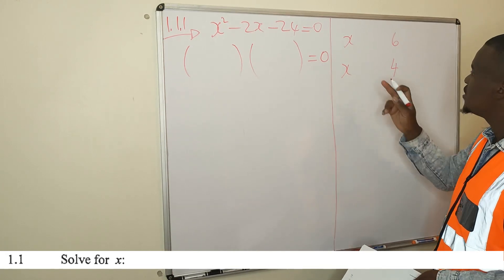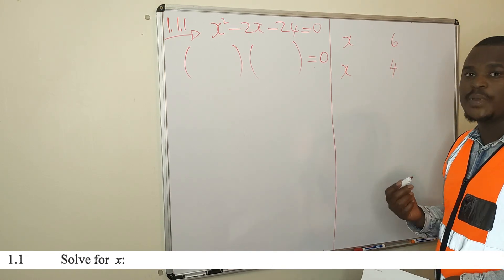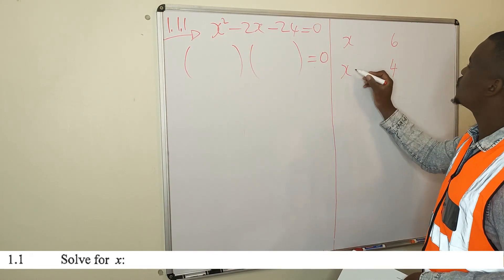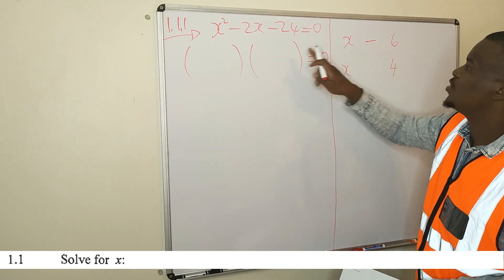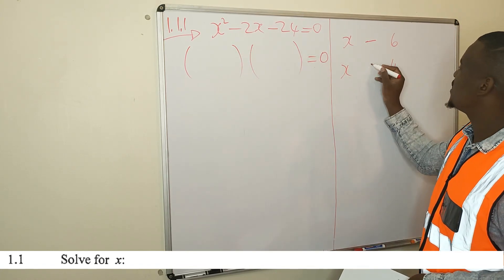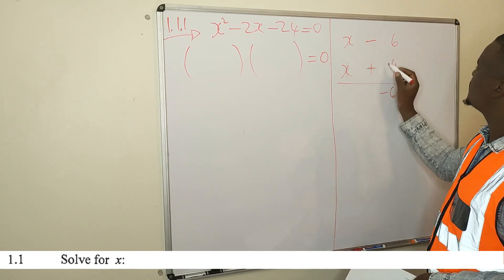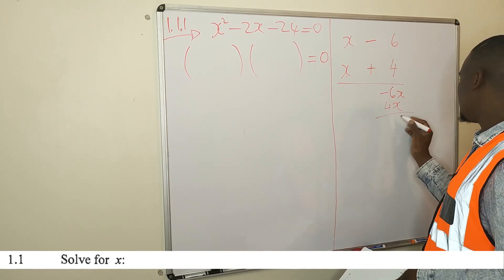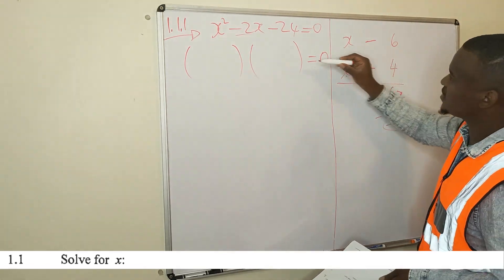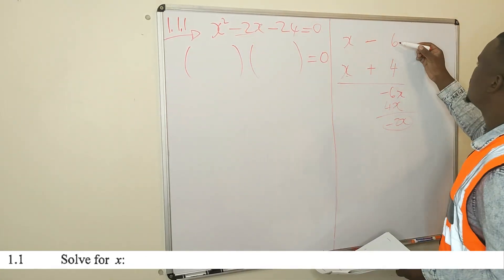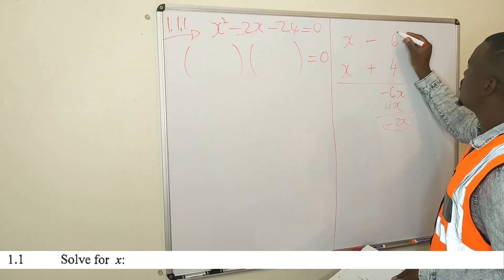So cross-multiply: this times this is 6x, this times this is 4x. For the bigger cross-multiplication, take the sign of the middle term — so 6x will have a negative sign, and 4x will be positive. So you get minus 6x and plus 4x. If you add them, they give you minus 2x, which is our middle term. x times x gives you x squared. Minus 6 times 4 gives you minus 24.